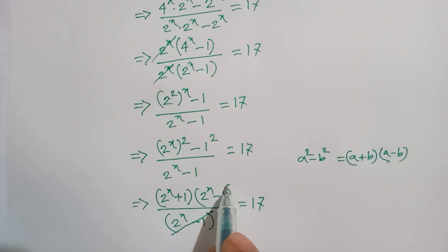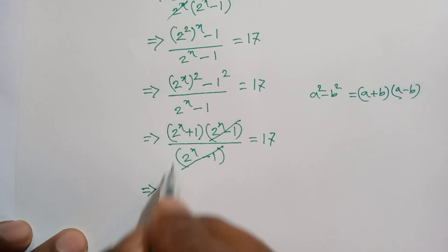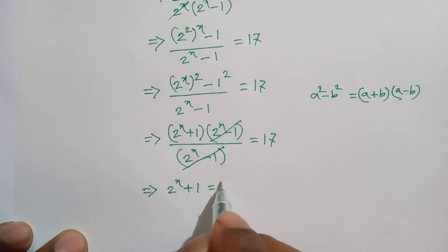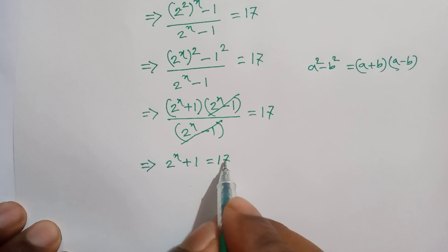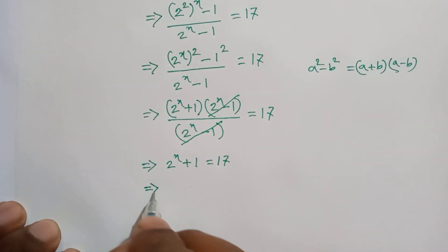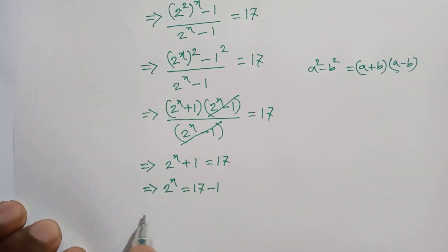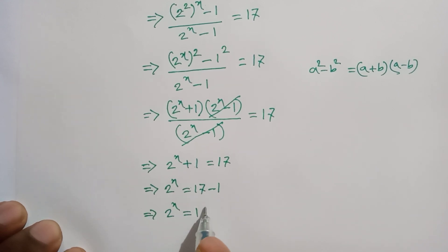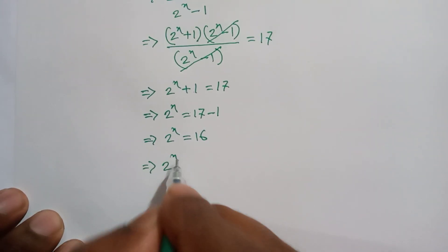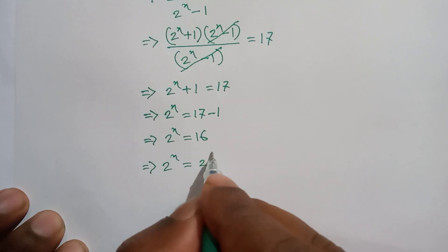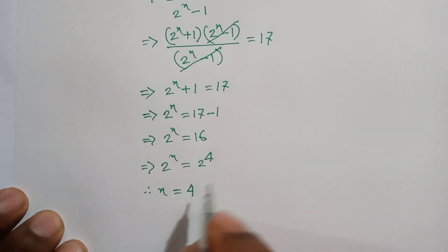After cancellation, we have 2 to the power x plus 1 equals 17. Moving the positive 1 to the right side gives 2 to the power x equals 17 minus 1, so 2 to the power x equals 16. Since 16 equals 2 to the power 4, we get x equals 4.